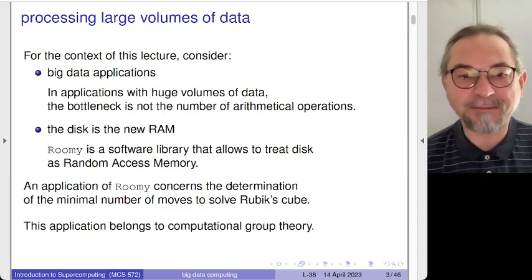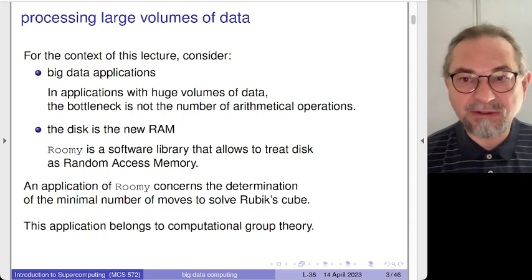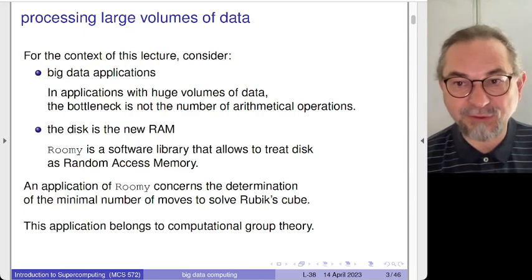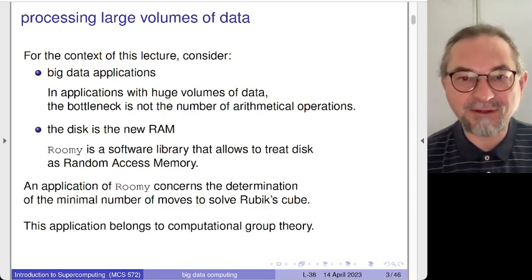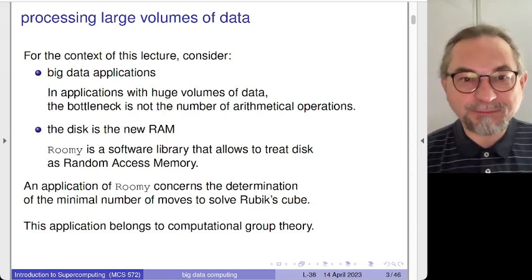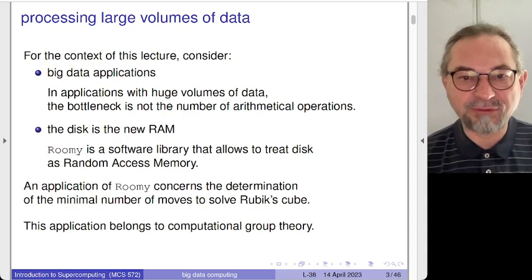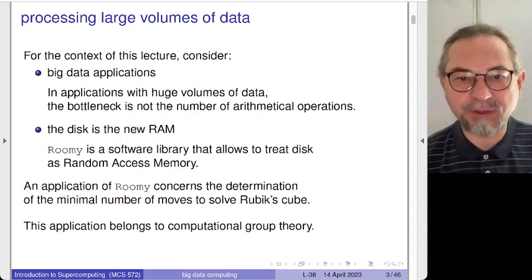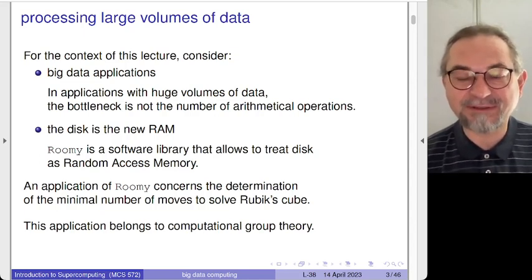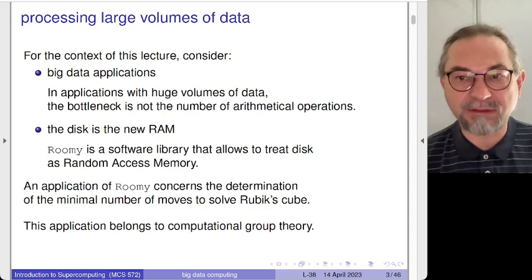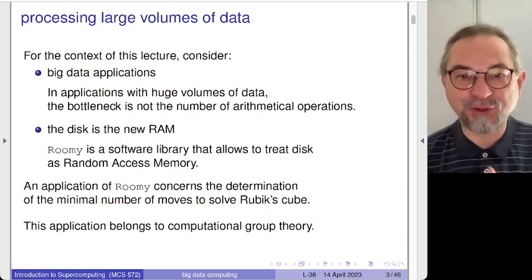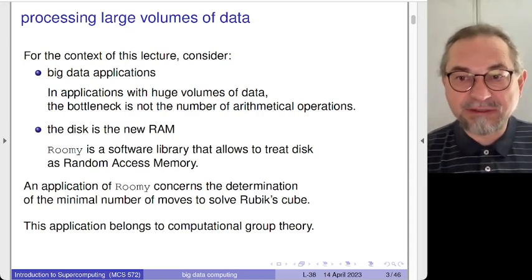The first part consists of an application belonging to computational group theory — we will go to the beautiful fantasy world of pure mathematics. We have a lot of data, and in order to process it, it needs to get into random access memory. The idea of the software ROOMY is to treat the disk as random access memory. It sounds naive at first, but it makes sense with parallelism in mind. One application is the Rubik's Cube puzzle.